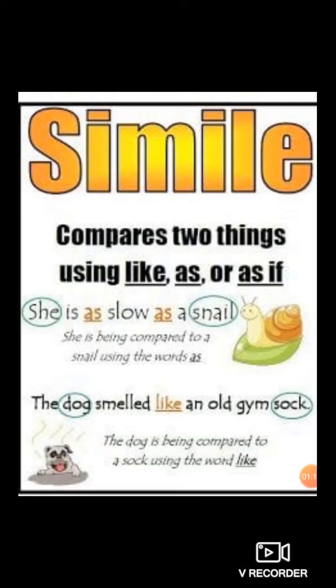Second example: 'The dog smelled like an old gym sock.' The dog and the sock are two different objects. A direct comparison is made using the word 'like.' The dog is being compared to a sock using the word 'like,' so it is a simile.